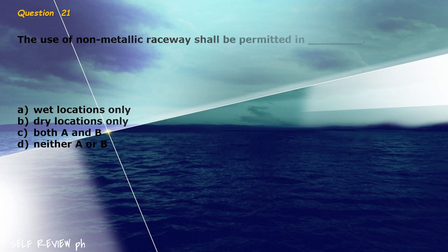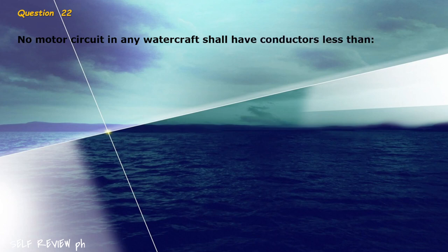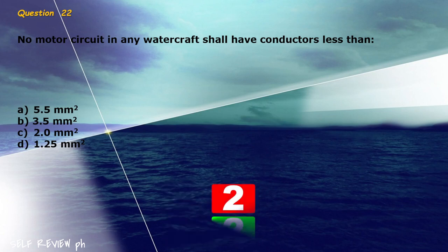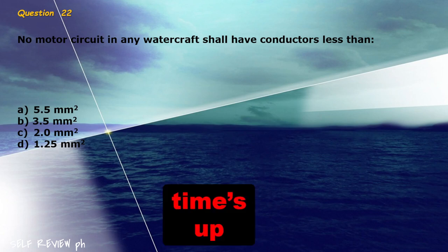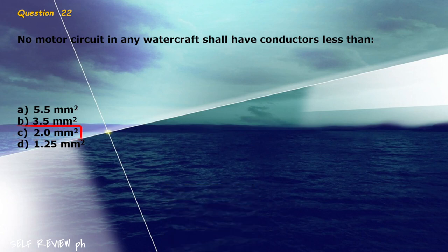Question 22: No motor circuit in any watercraft shall have conductors less than blank. A) 5.5 mm², B) 3.5 mm², C) 2.0 mm², D) 1.25 mm². The correct answer is letter C, 2.0 mm².